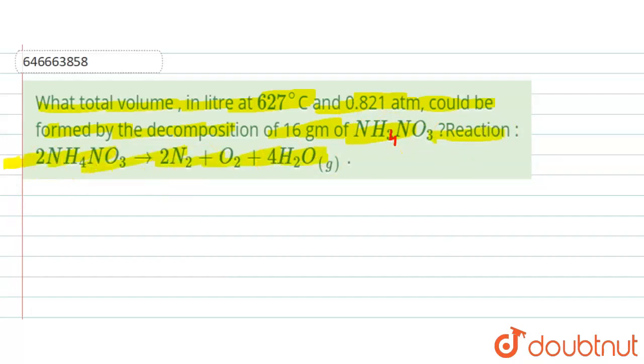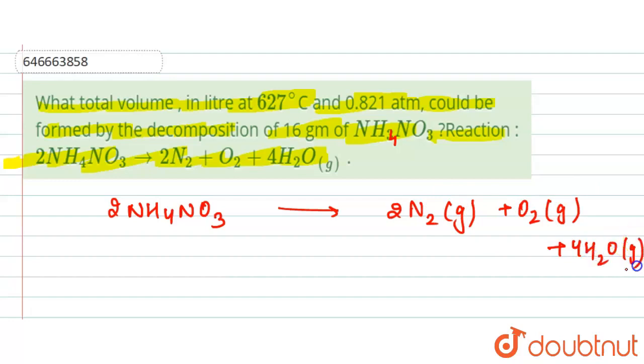Now here we are given with the reaction that is 2NH4NO3 yields 2N2 gas plus O2 gas plus 4H2O gas.